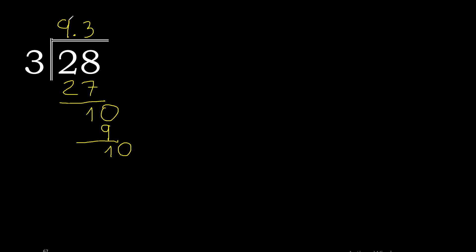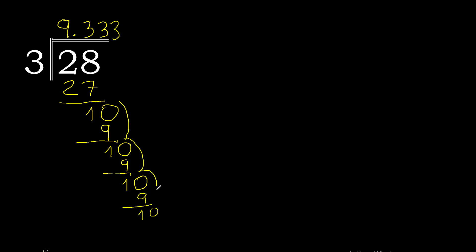Point — only once. 3 multiplied by 3 is 9. Subtract. Complete. Multiplied by 3 is 9. This repeats, therefore this number repeats: 9.3 — 3 repeats.